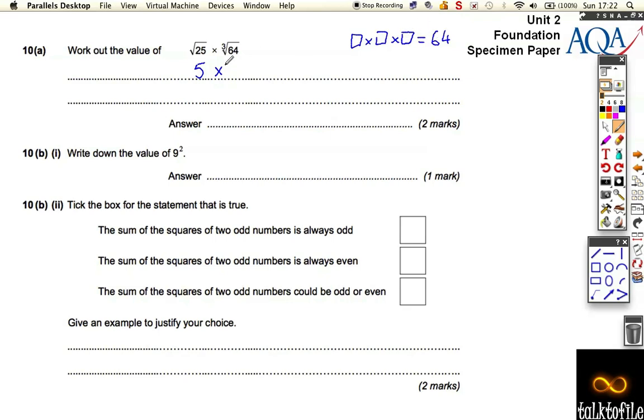If we've got either of those answers, that's a mark, but you've actually then got to do 5 times 4 is 20 for the second mark. Write down the value of 9 squared.